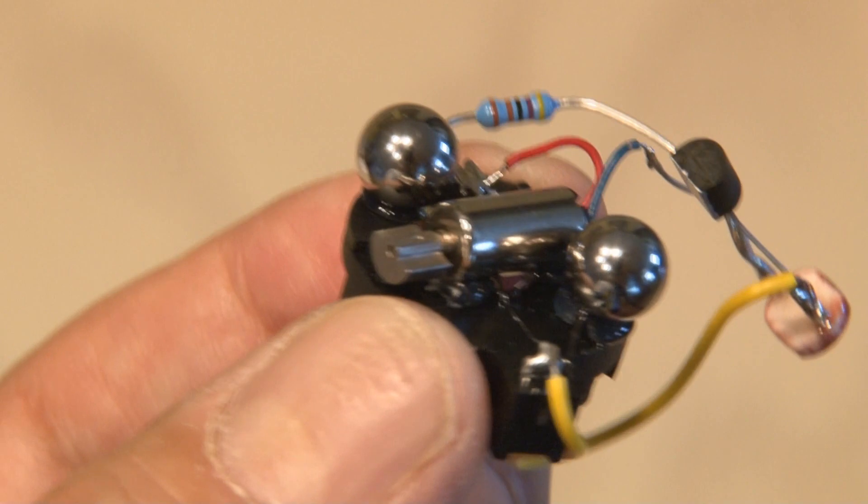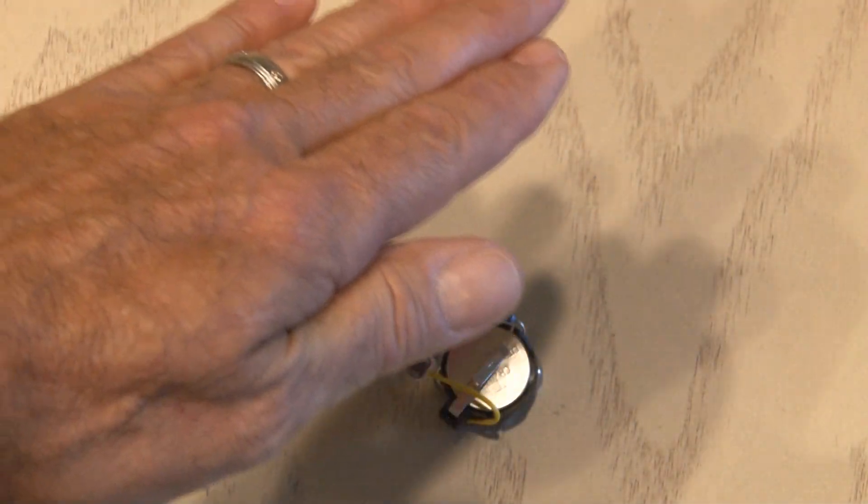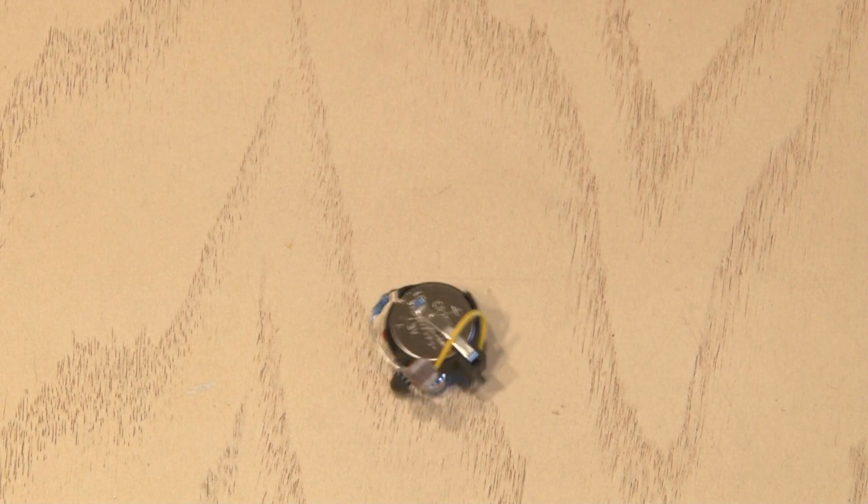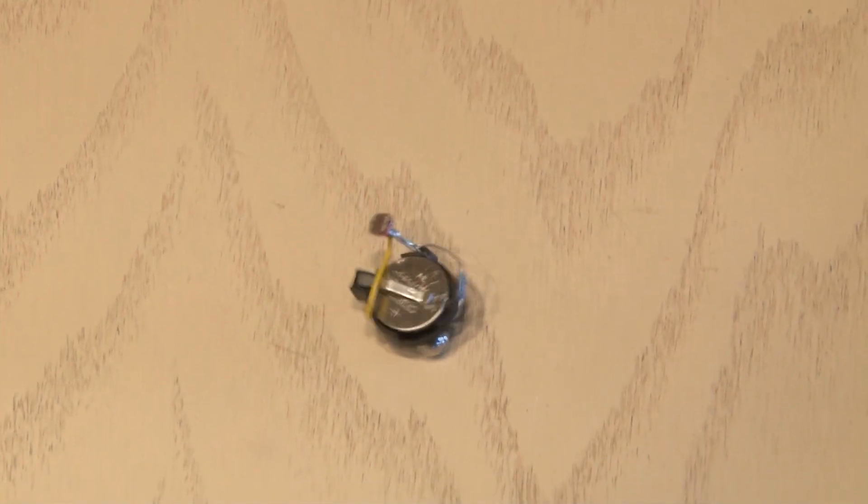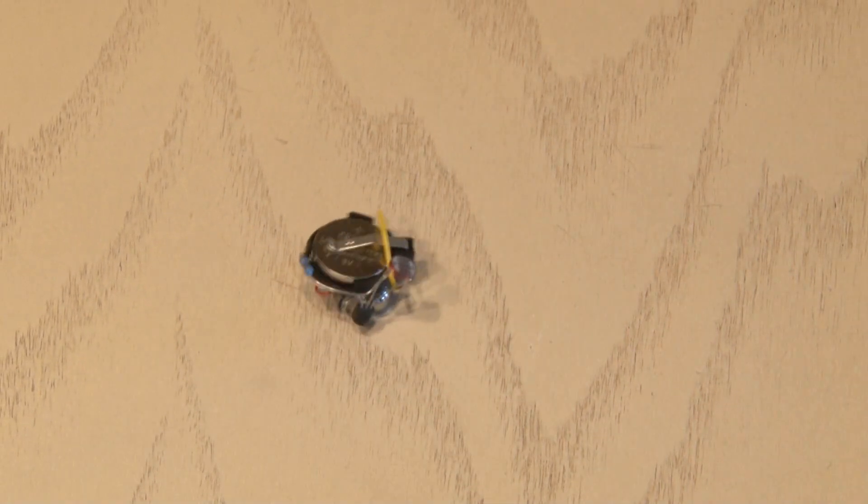All you have to do is add your button cell battery and let her go. Giving the jitterbug light makes it go. And you can see in this case, it's kind of going around and around in circles. So I want to make one change to my jitterbug.